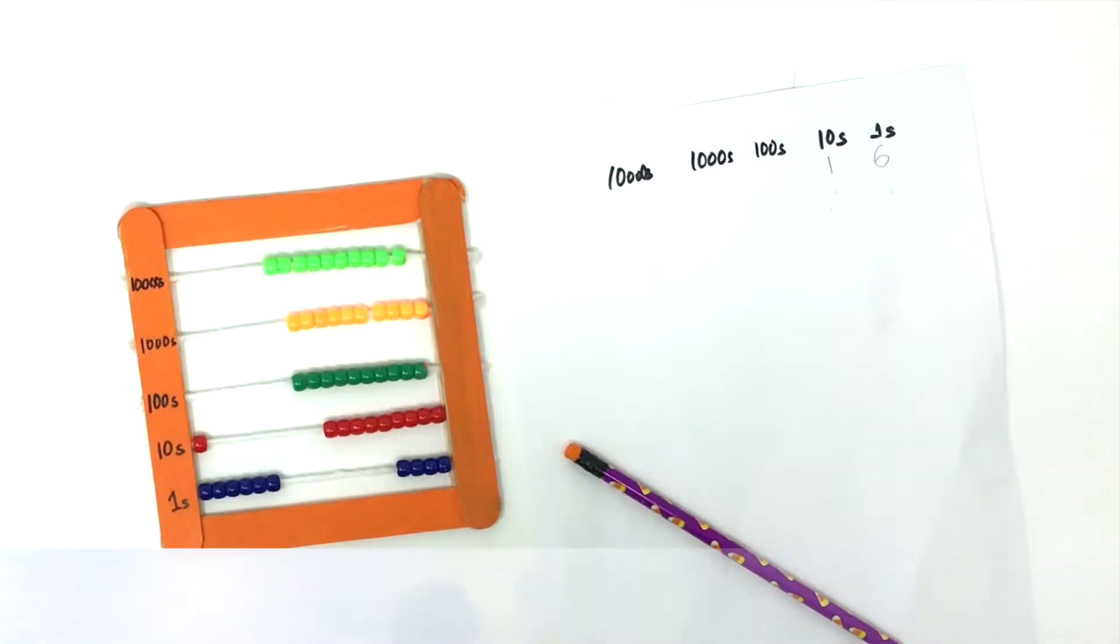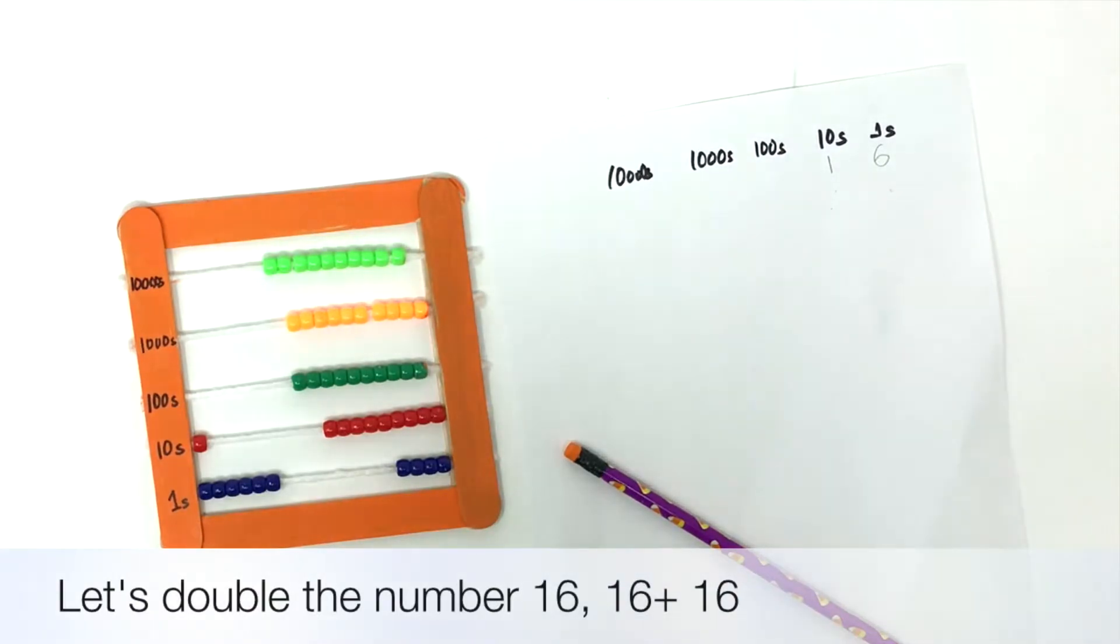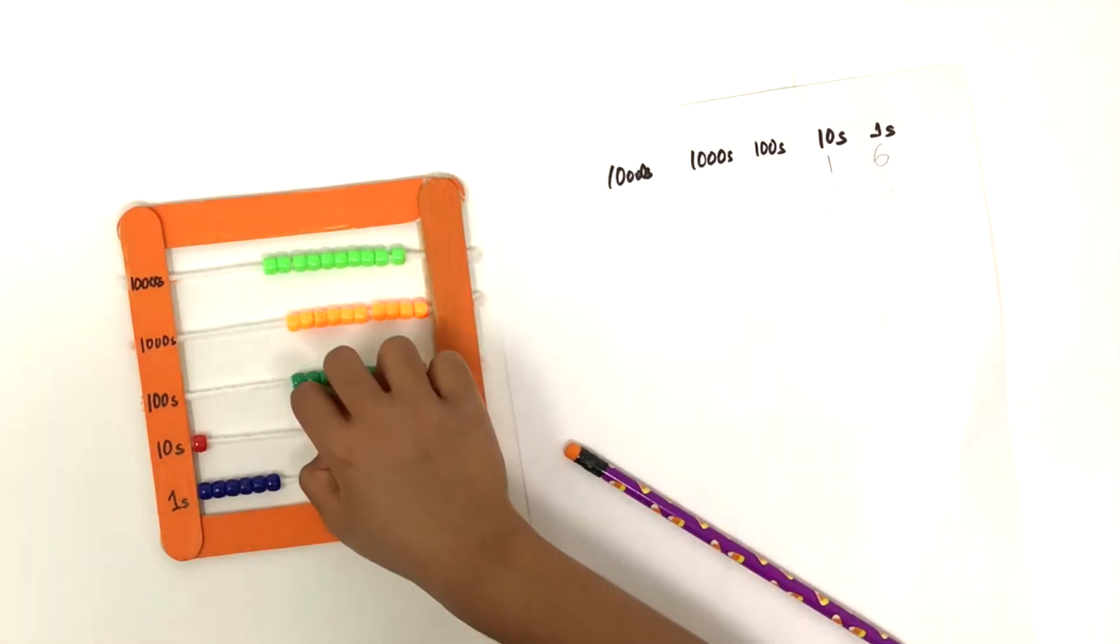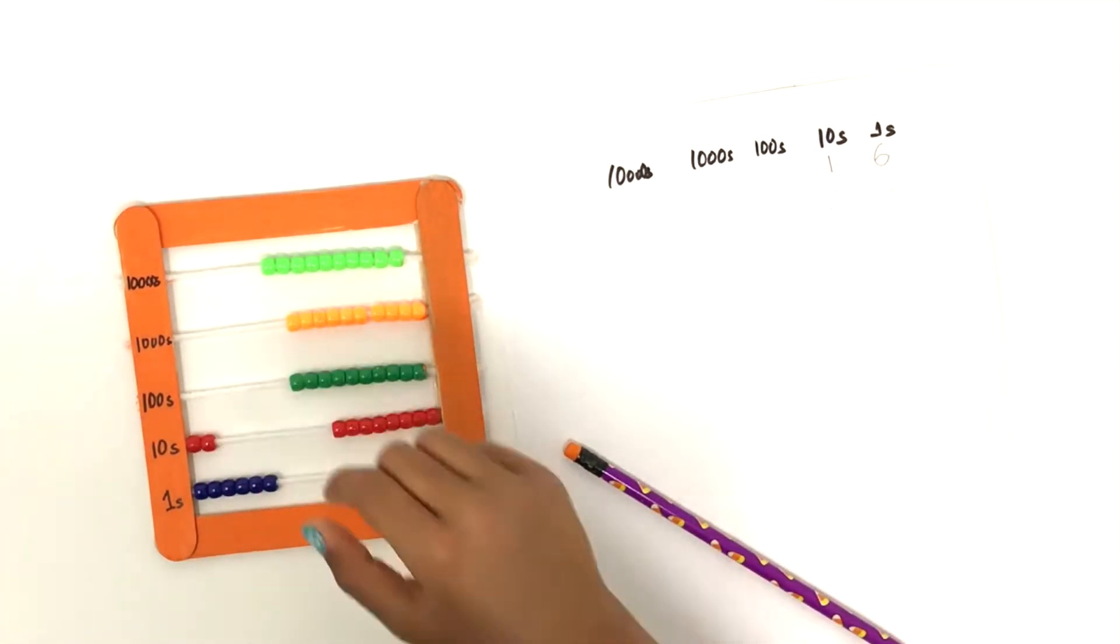Now we are going to get more trickier. We are going to add 16 plus 16. That is we are doubling the number 16. How are we going to do it? We are going to double all the beads in each of those rows. So in the tens place, we have 1 bead, so we need to double it. We have 1 more bead. You got it.